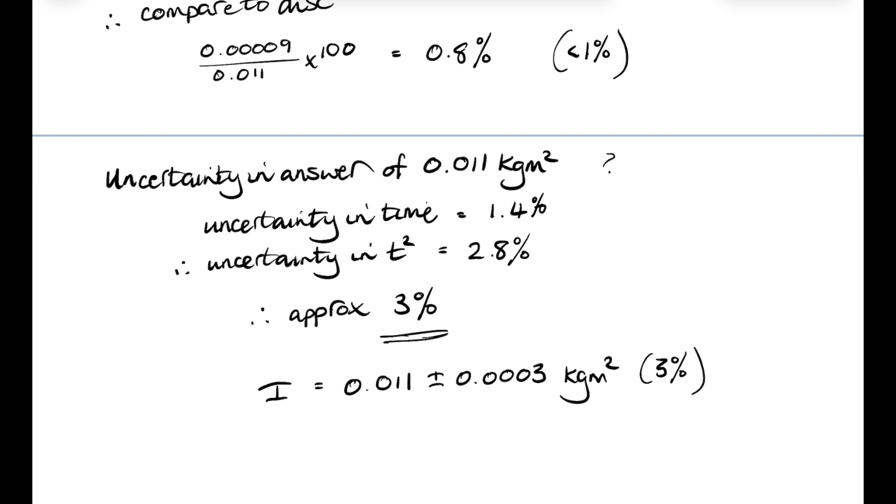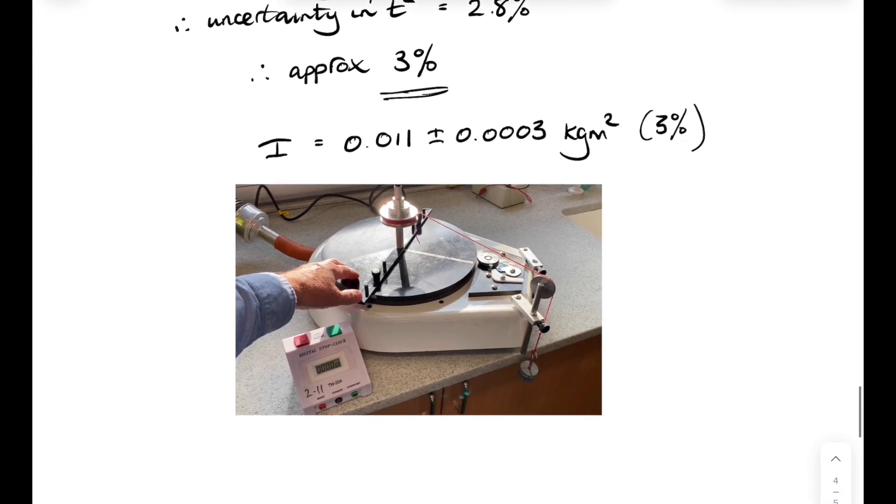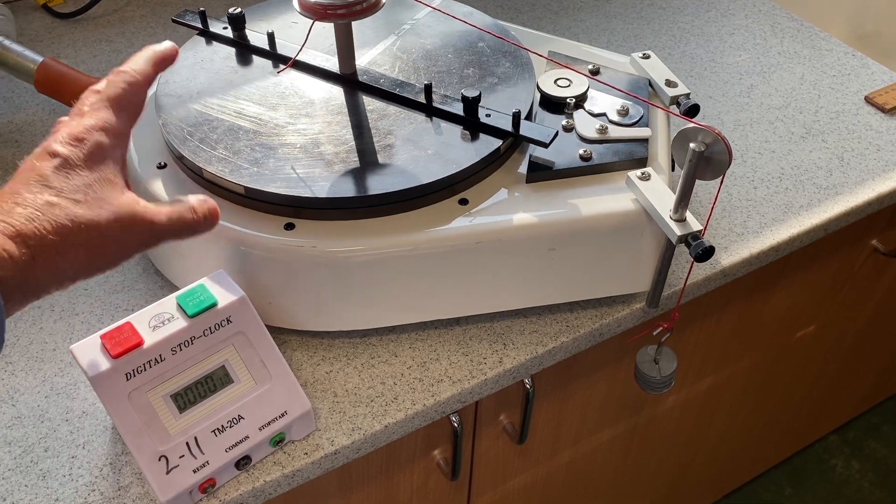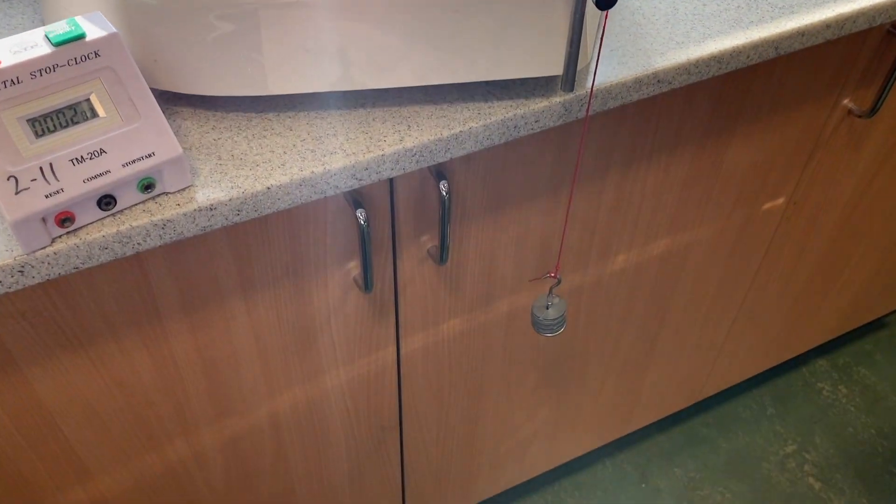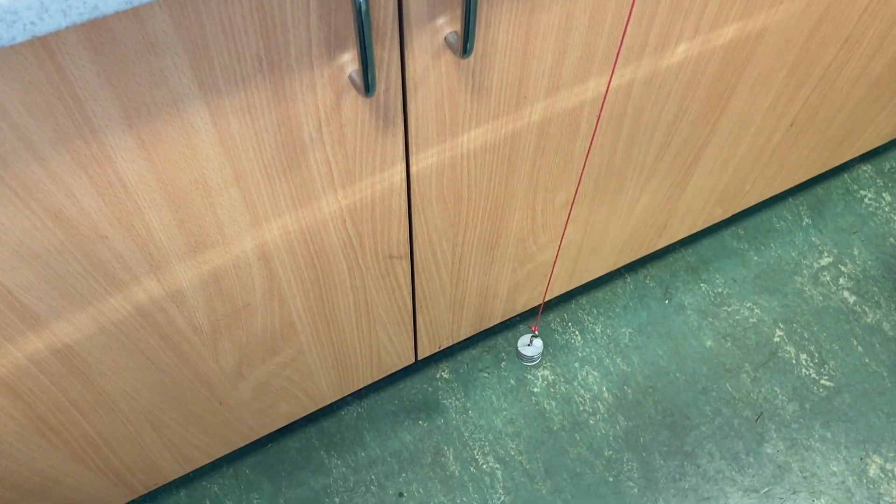Now that might be the sort of procedure you do in your advanced higher physics project. Although it would be much better to do it in a way where you could get a graph of your results, and do an analysis of that graph. And of course a much more rigorous approach to your uncertainties. Anyway, there you go. Have a great day now, and we'll see you in the next one.